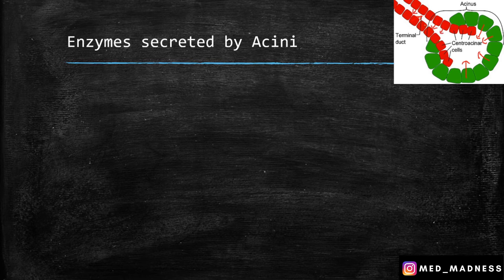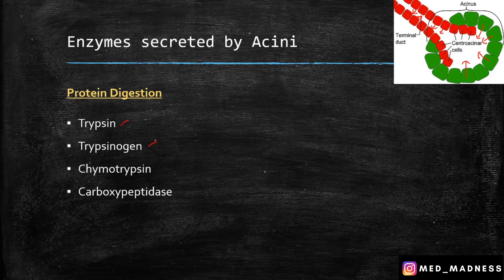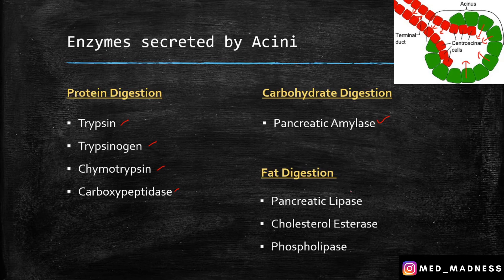Bicarbonate is very important to protect the duodenum from acids. What are all the different enzymes we have in the pancreas? For protein digestion, we have trypsin, trypsinogen, chymotrypsin, and carboxypeptidase. For carbohydrate digestion, we have pancreatic amylase. For fat digestion, we have pancreatic lipase, cholesterol esterase, and phospholipase. These are all the different enzymes secreted by the acini.